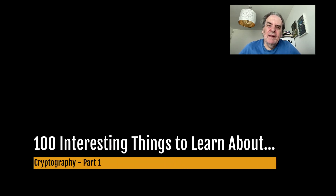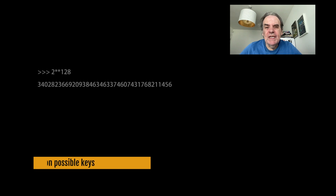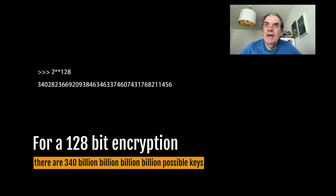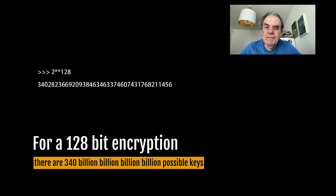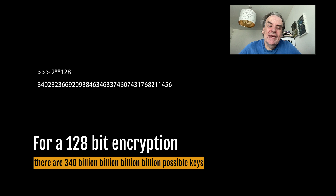100 interesting things to learn about cryptography. For a 128-bit encryption key there are 340 billion billion billion billion possible keys. A billion is a thousand million. The calculation for this is 2 to the power of 128 divided by 10 to the power of 9, to the power of 4.